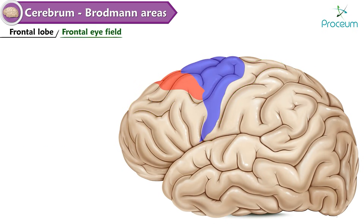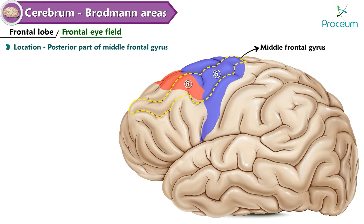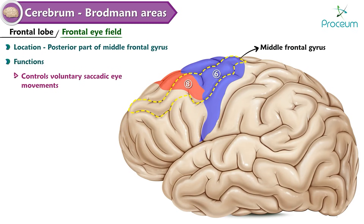Frontal eye field — Area 8. Location: posterior part of the middle frontal gyrus. Functions: controls voluntary saccadic eye movements; stimulation causes contralateral conjugate deviation of the eyes.